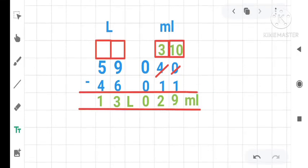So when we subtract 46 liter 11 milliliter from 59 liter 40 milliliter, we get 13 liter and 29 milliliter as our answer.